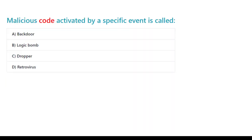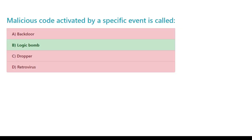Malicious code activated by a specific event is called: A. Backdoor. B. Logic bomb. C. Dropper. D. Retrovirus. The correct answer is B. Logic bomb.